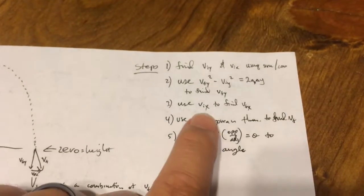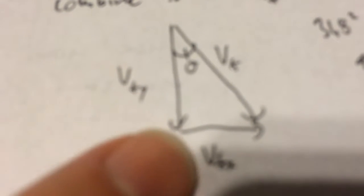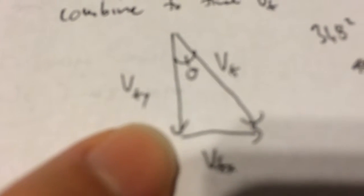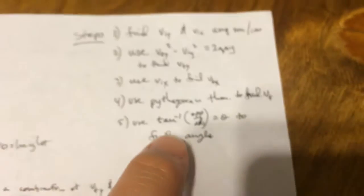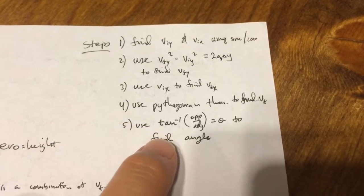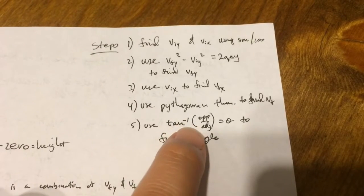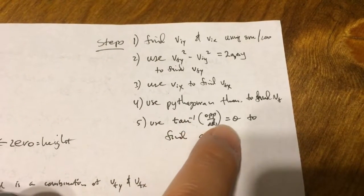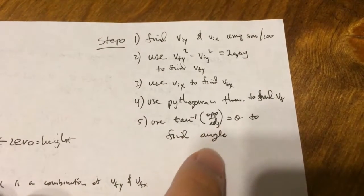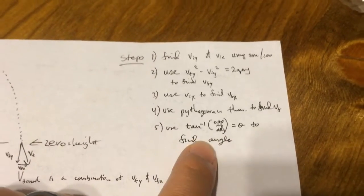And then once we know those two things, basically we have something that looks like this. And this is a right triangle and we can use the Pythagorean theorem to solve this right triangle. We know this part, we know that part. Pythagorean theorem: a squared plus b squared equals c squared. So we'll do that. And then once we know that, we can use the inverse tangent of the opposite over the adjacent equals the angle, or equals theta, to find the angle. So those are the steps.